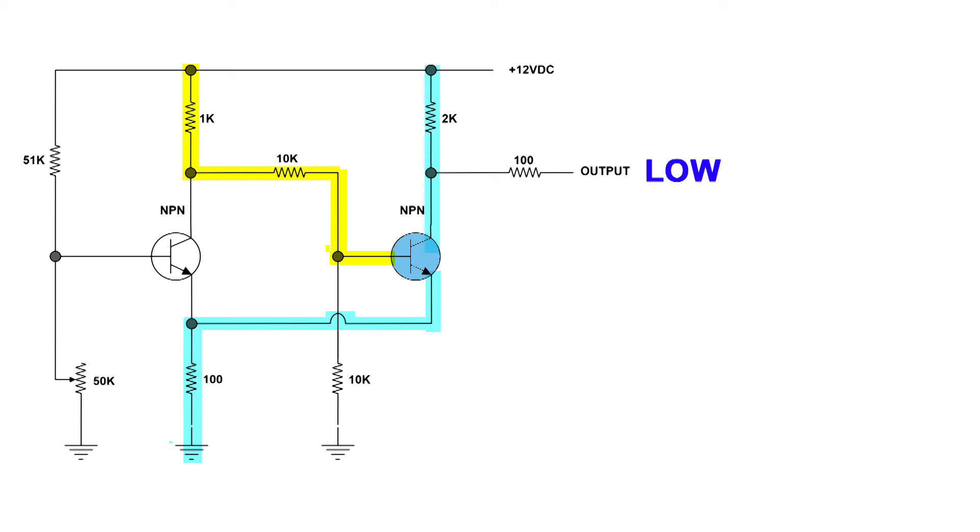Now here is the path that the second transistor conducts from the collector to the emitter through the 100 ohm resistor to ground. And what I want to point out here is the path for the bias for that second transistor. It comes from that 1k ohm resistor.